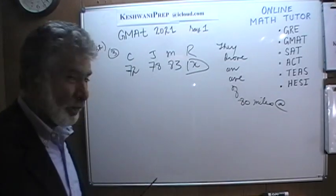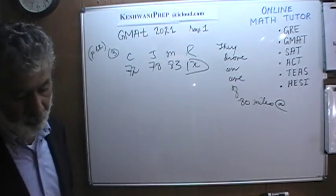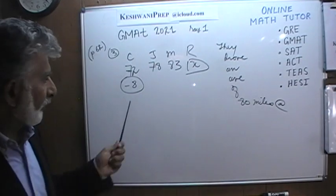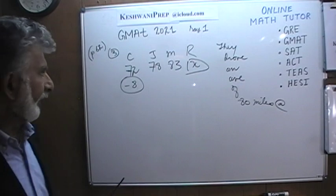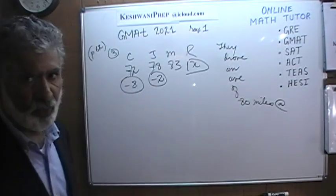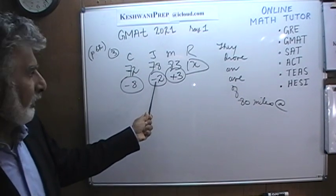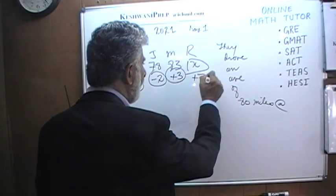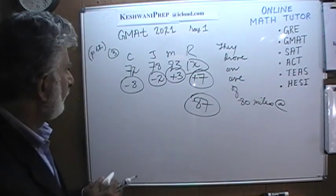We can do this the quick way: if everybody had driven 80 miles, the average would be 80. C drove 72 — eight miles short. J drove 78 — two miles short. That's a shortfall of 10. M drove 83 — three miles more than average, making up three of those 10. So R must drive seven more than 80, which means R drove 87 miles.